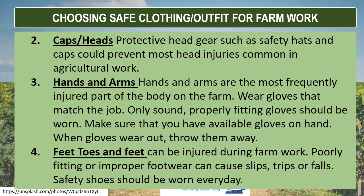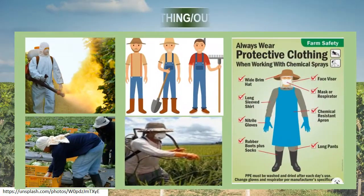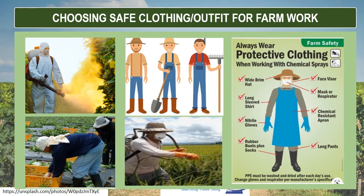Number three — hands and arms: hands and arms are the most frequently injured part of the body on the farm. Wear gloves that match the job. Only sound, properly fitted gloves should be worn. Make sure that you have available gloves on hand. When gloves wear out, throw them away. Number four — feet and toes: feet can be injured during farm work. Poorly fitting or improper footwear can cause slips, trips, or falls. Safety shoes should be worn every day. Here are some examples of safety clothing or outfit for farm work.